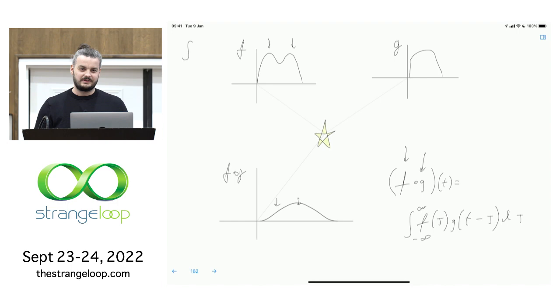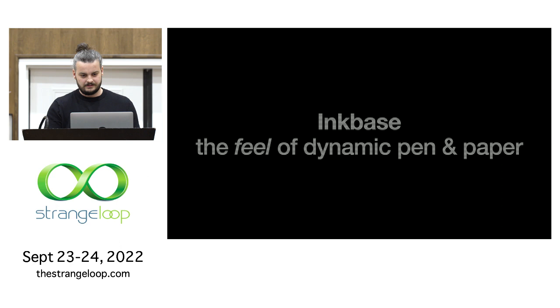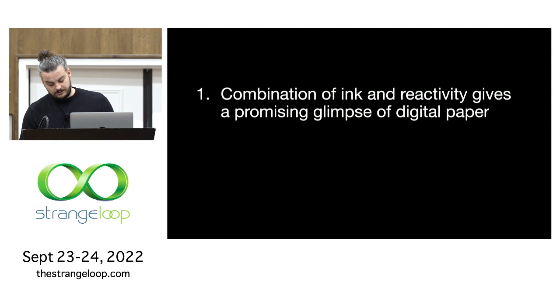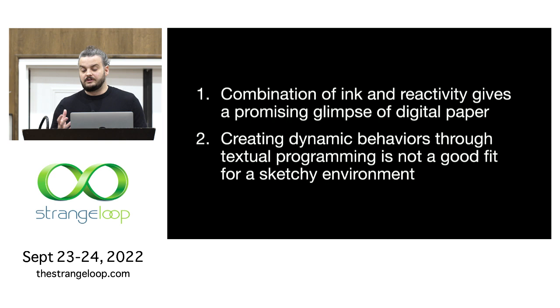So if we switch to my slides for some conclusions, first of all, we believe that this combination of ink and reactivity shows a very promising glimpse of digital paper. Basically, the very high-level use of this prototype feels great and is what guided future explorations. But we also know that the way to create the dynamic behaviors through textual programming is just not a good fit for this sketchy environment. We basically didn't escape the tyranny of formalisms that we talked about. To get anything out of the system, you need to describe the functionality in excruciating details. You even have to drop what you're doing and put on your programmer hat, and basically focus on the tool, not on the task. So the upcoming prototypes I'm going to show you, try to solve some of these problems.